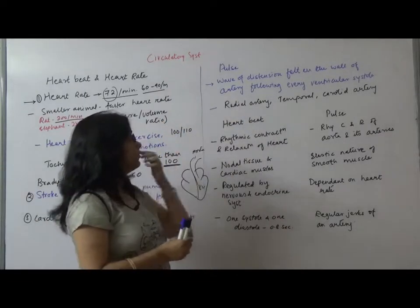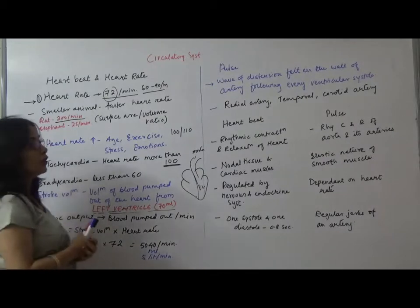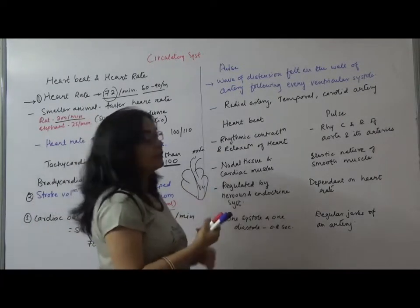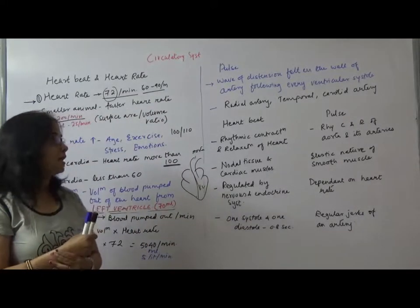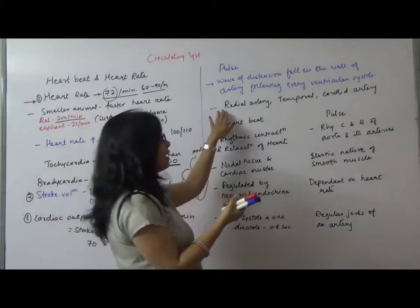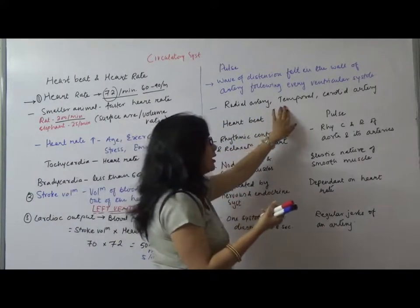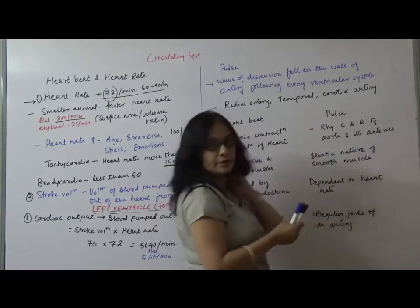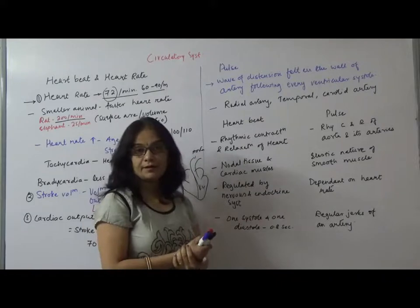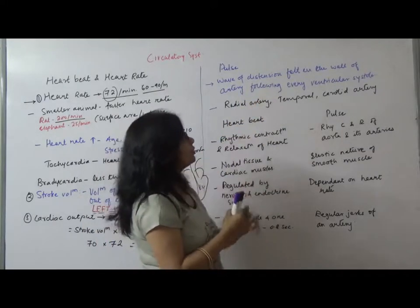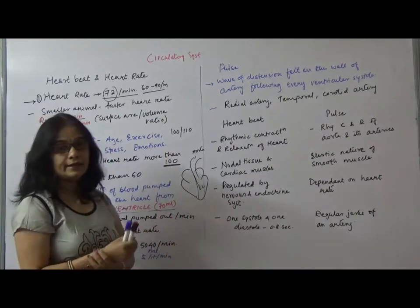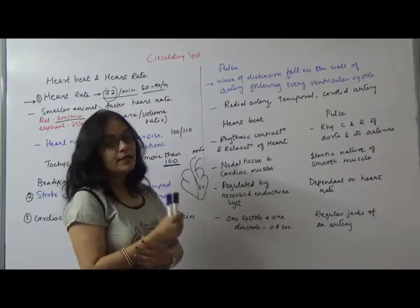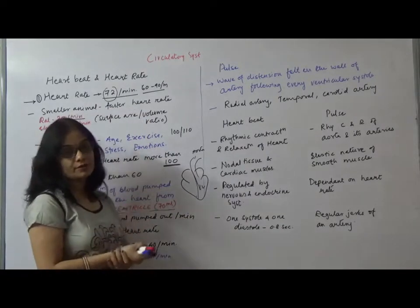Now, pulse. Pulse is a wave of distension felt in the wall of artery following every ventricular systole. Systole meaning contraction. Pulse can be felt or you can say pulse can be the rhythmic contraction and relaxation of aorta and its arteries. Pulse is generally taken on the superficial arteries like the radial artery which is present on the wrist, temporal artery present on the temporal region, and carotid artery generally in the neck. These are the places, the superficial arteries from where you can take the pulse.